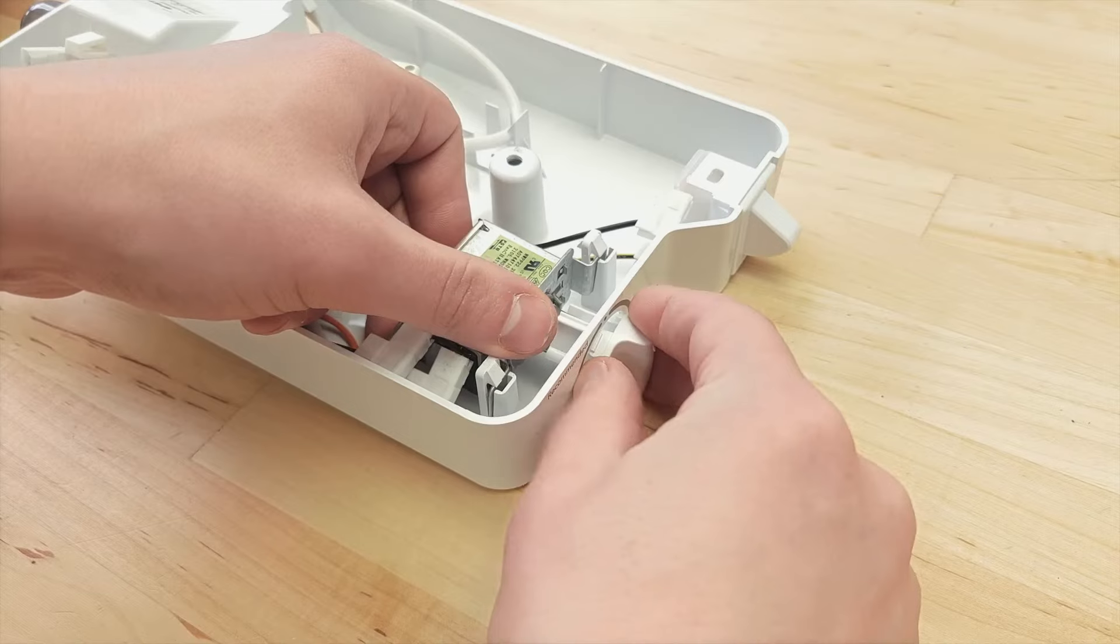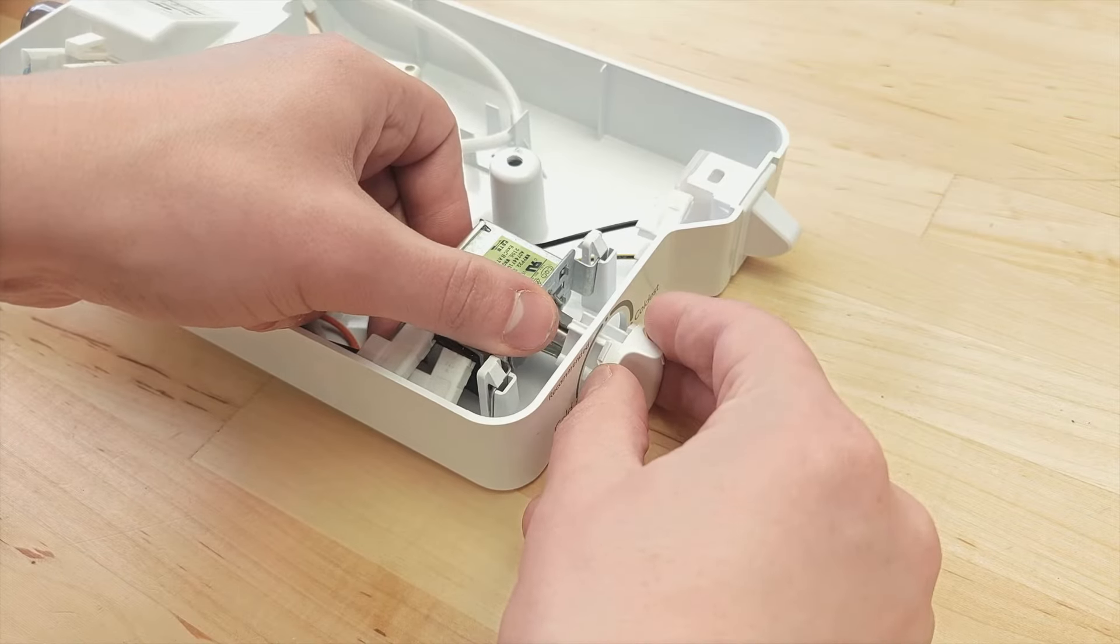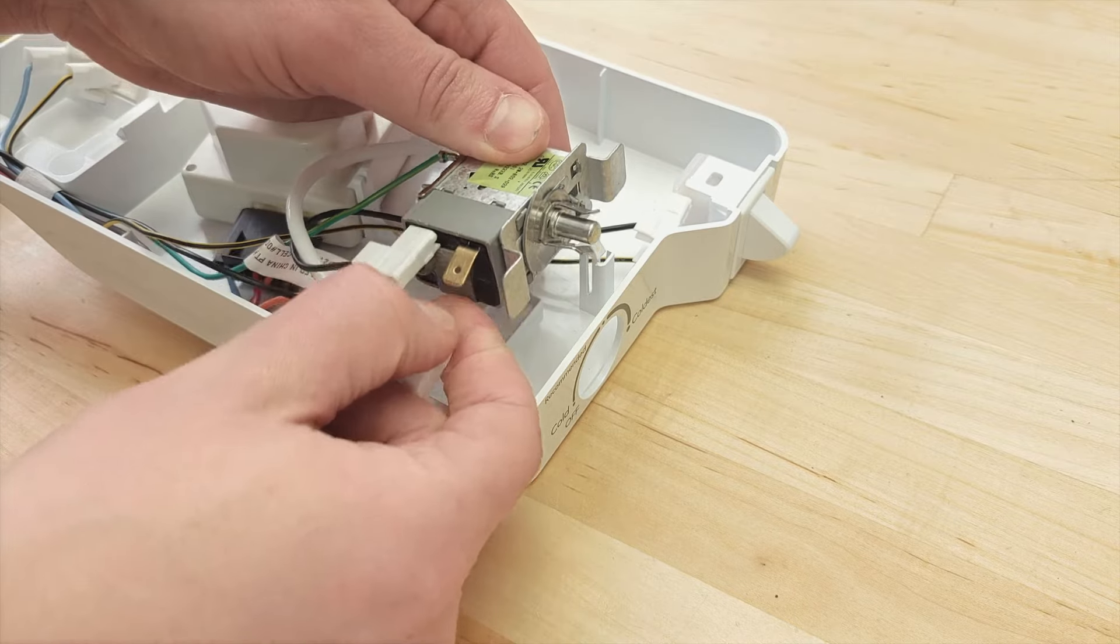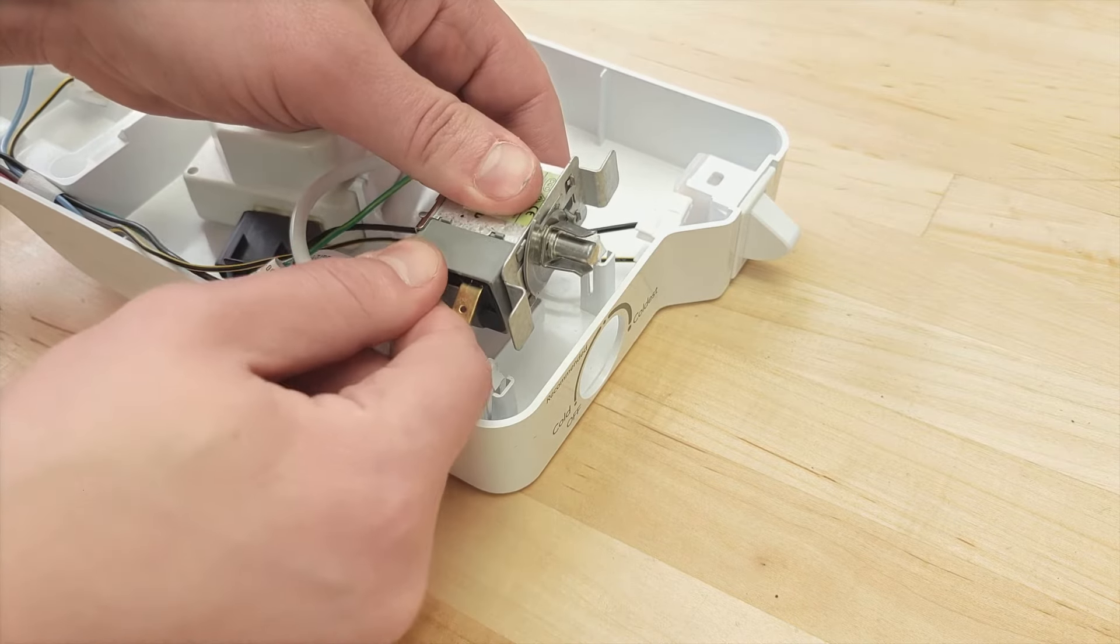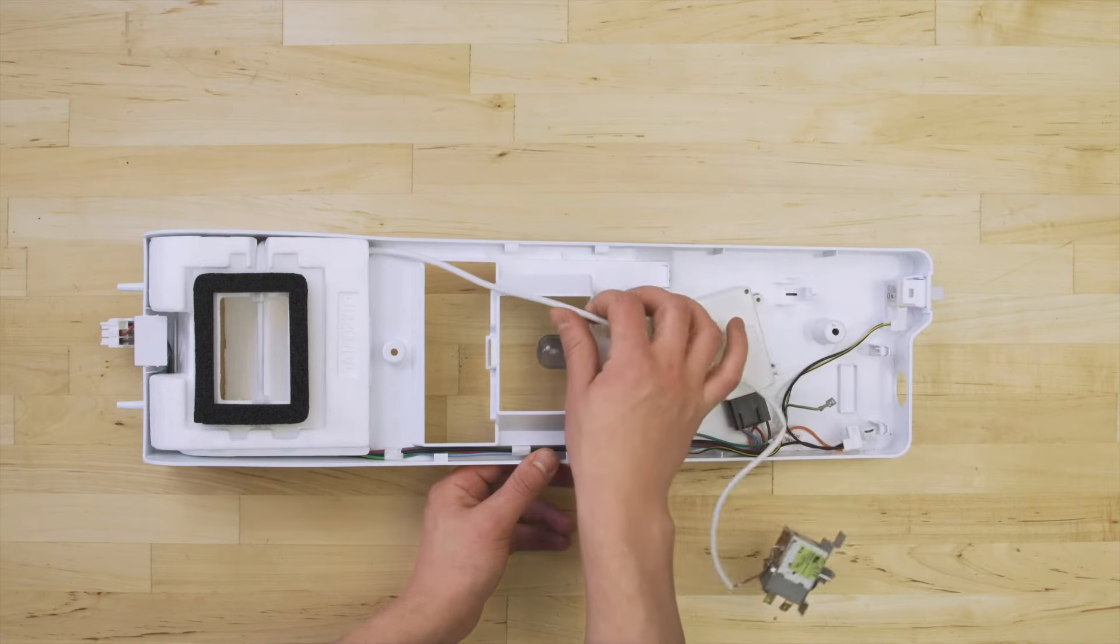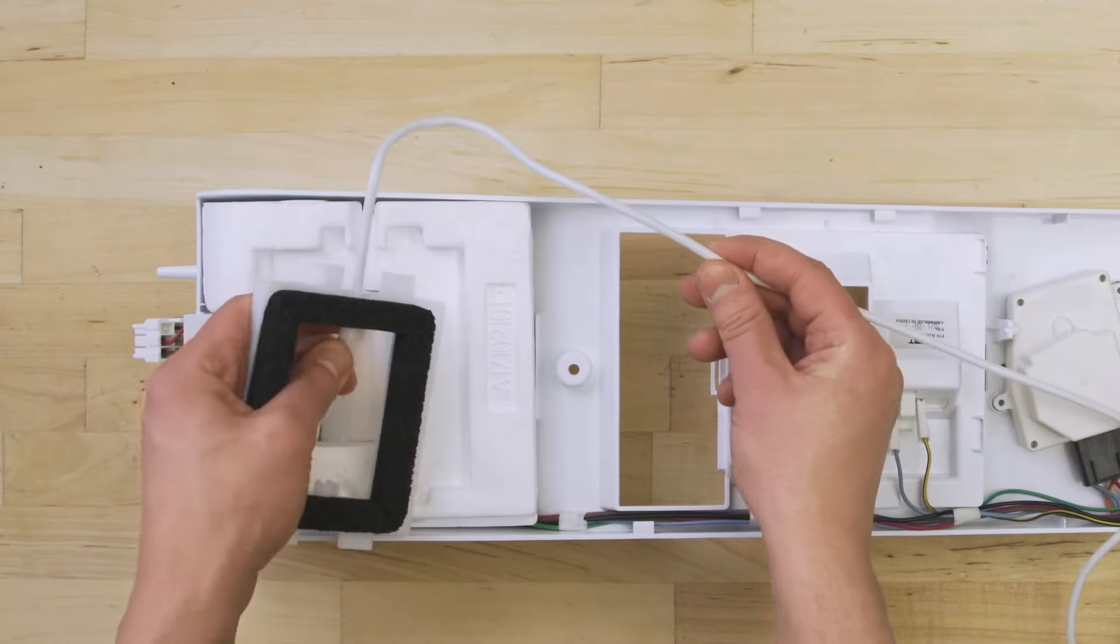Depending on the model, you might have to remove the dial first. Now lift up and disconnect the wires. Next, remove the thermostat and the sensing bulb.